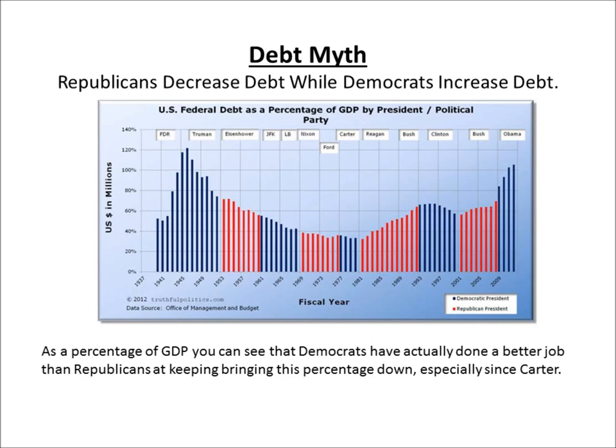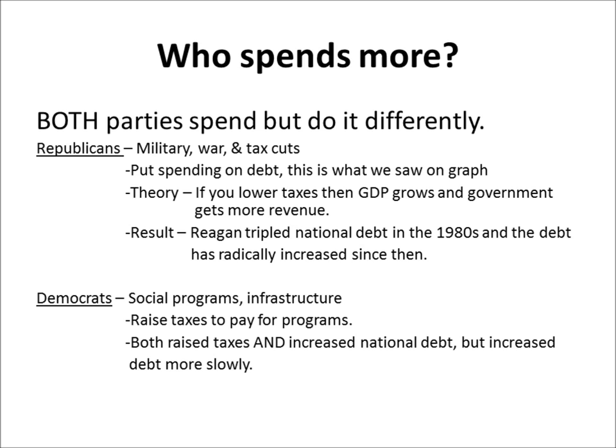Now, who spends more? Both parties spend, but they do it differently. Republicans like to spend money on the military, war, and tax cuts — and yes, tax cuts are an expenditure, we'll get to that later. Under Republicans, the reason the debt climbs more steadily than under Democrats is because the national debt actually does increase faster under Republicans. That's because their spending they like to put on the credit card.